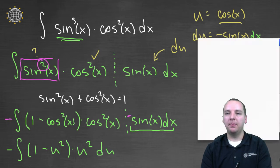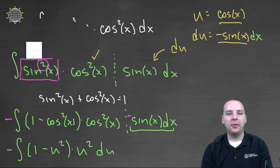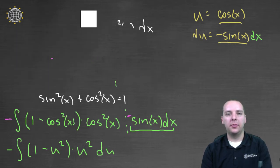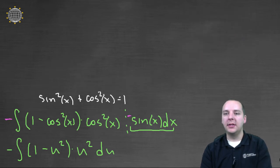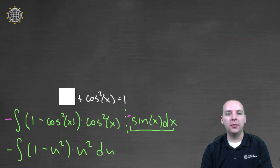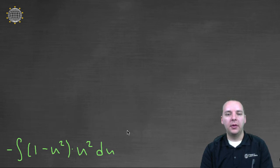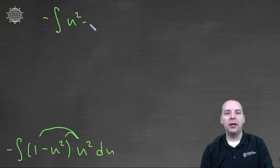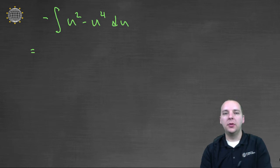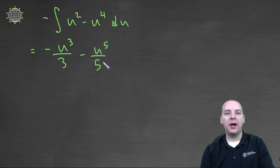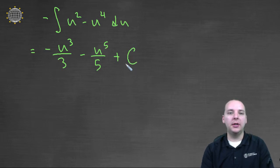So now all we have to do is finish this guy out. This guy right here would be the integral, I'm sorry, negative the integral of, if we distributed this guy, we would have u^2 - u^4 du. And this guy's integral, we can even erase this now.